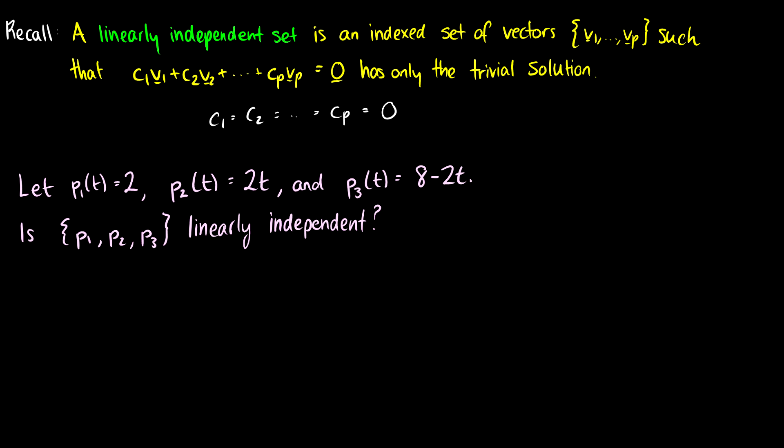We're going to do some questions with polynomials. The first polynomial is equal to 2, the second polynomial is equal to 2t, and the third polynomial is equal to 8 minus 2t. We're asked: is the set of these three linearly independent?